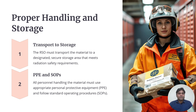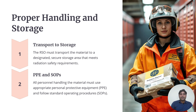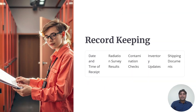Regarding proper handling and storage, the material should be transported to a designated secure storage area that meets radiation safety requirements. All PPE and SOPs should be followed during storage and handling. Regarding record keeping, records should include the date and time of receipt, radiation survey results, contamination checks, inventory updates, and the shipping documents.